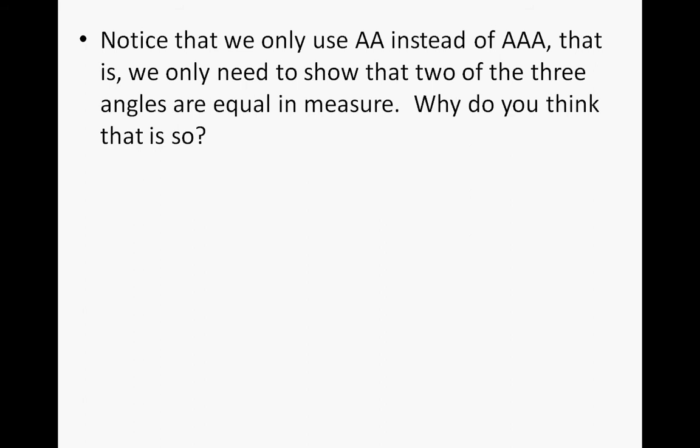Notice that we only use AA instead of AAA because we only need to show that two of the three angles are equal in measure. Why do you think that is so? Go ahead and formulate your hypothesis. Why do we just use AA instead of AAA? Why don't we talk about all three angles of a triangle needing to be the same?